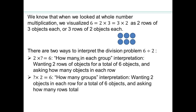The second interpretation: if something times 2 equals 6, that asks 'how many groups?' So put 2 objects in each group — how many groups do you get? You start putting 2 at a time until you exhaust 6, and you can see the answer is 3. So there are two different interpretations of division.